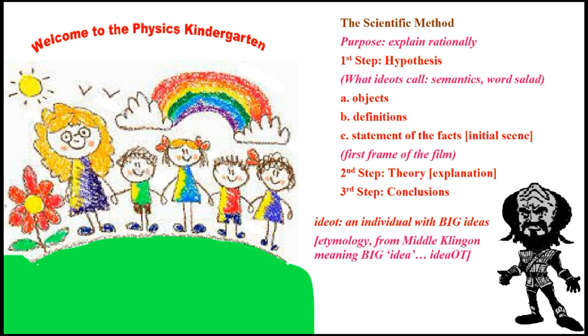If you have a definition that you can use consistently and rationally, then it's valid and you can proceed to the next step: the statement of the facts — the initial scene. You need to see what's in frame number one of your film, what your starting point is. Then you move on to step two, the theory, explaining your theory. Without these steps you have absolutely nothing — certainly an irrational theory — because if you skip the mandatory steps, what kind of theory do you have?